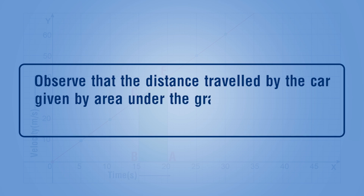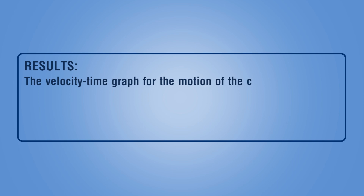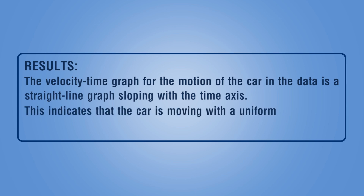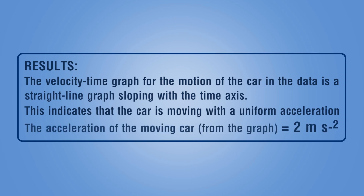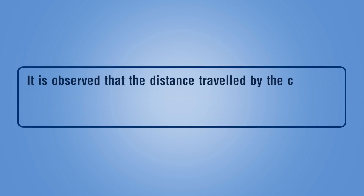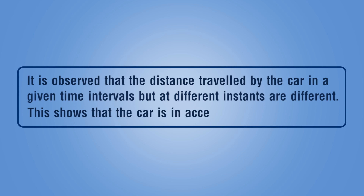Observe that the distance traveled by the car given by the area under the graph increases with time for the same time interval of 5 seconds. Results: the velocity-time graph for the motion of the car is a straight line sloping with the time axis, indicating that the car is moving with uniform acceleration. It is observed that the distance traveled by the car in a given time interval at different times are different — this shows that the car is in accelerated motion.